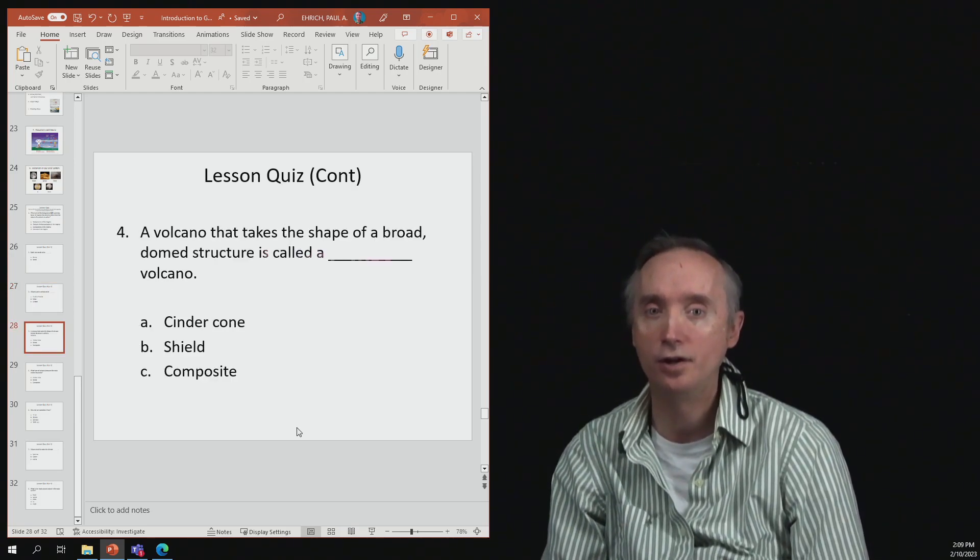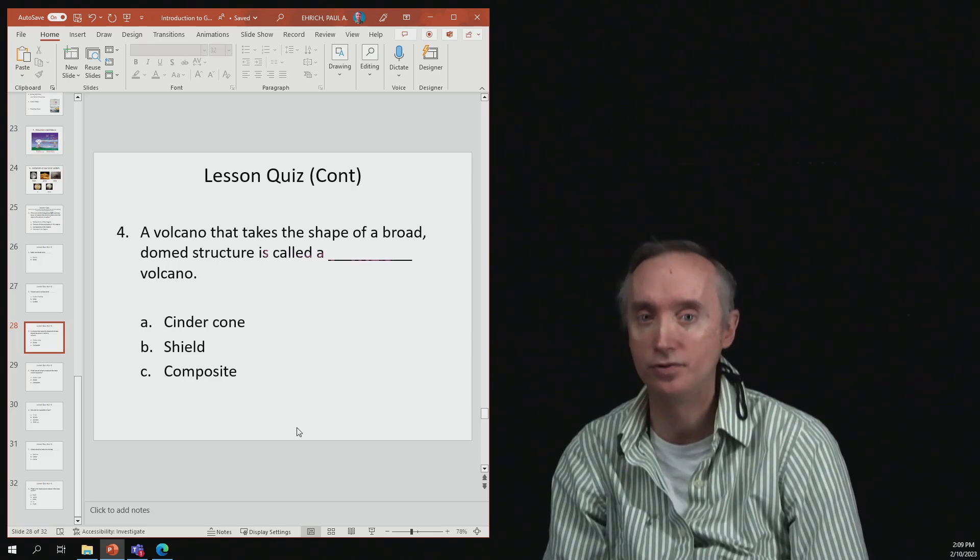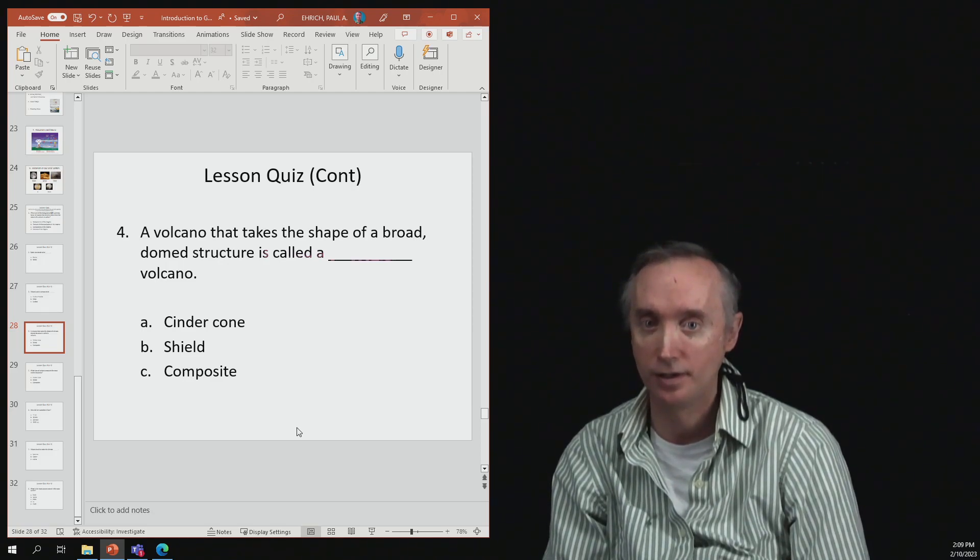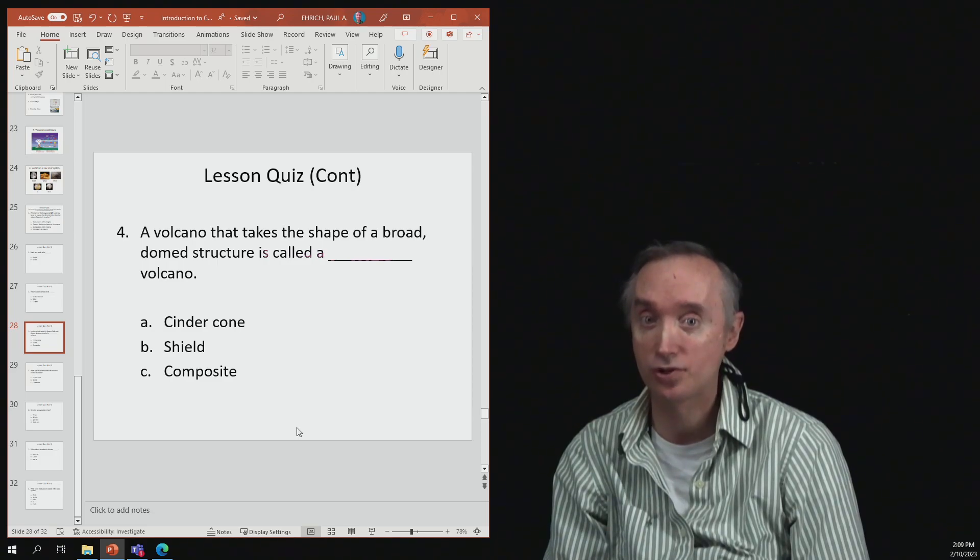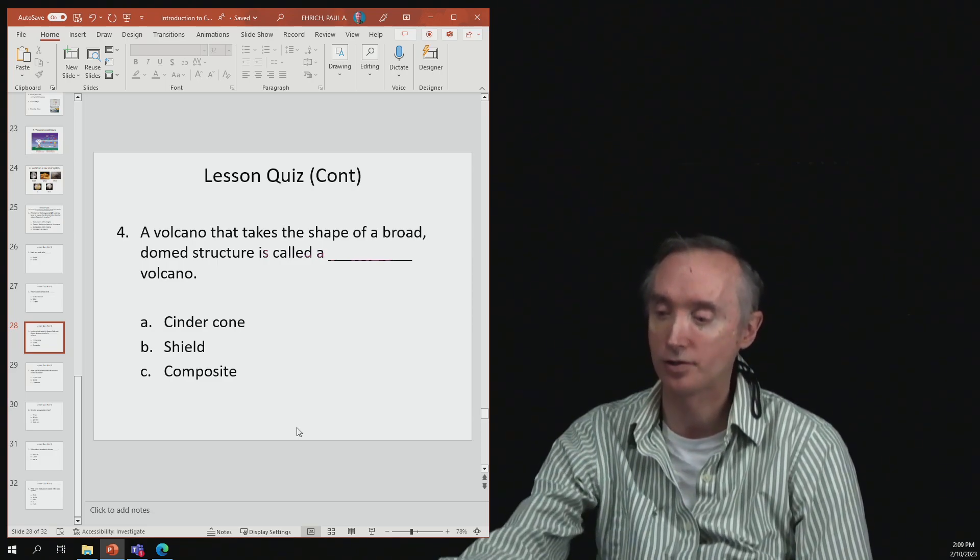Number four: a volcano that takes the shape of a broad domed structure is what kind of volcano? That would be the shield volcano - it's shaped like a shield.